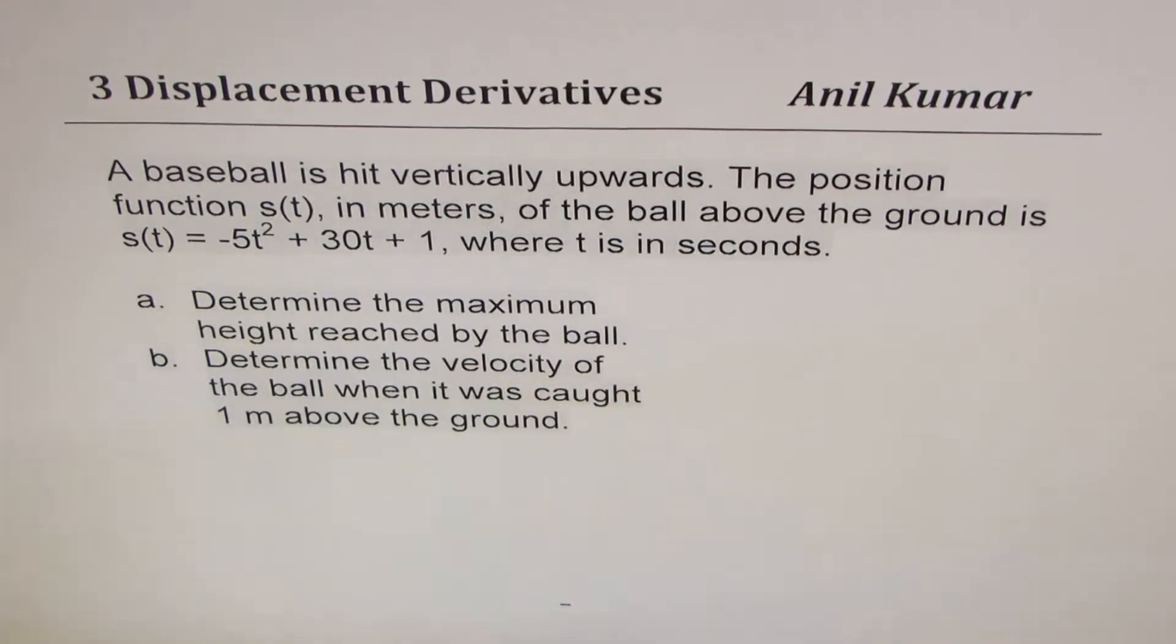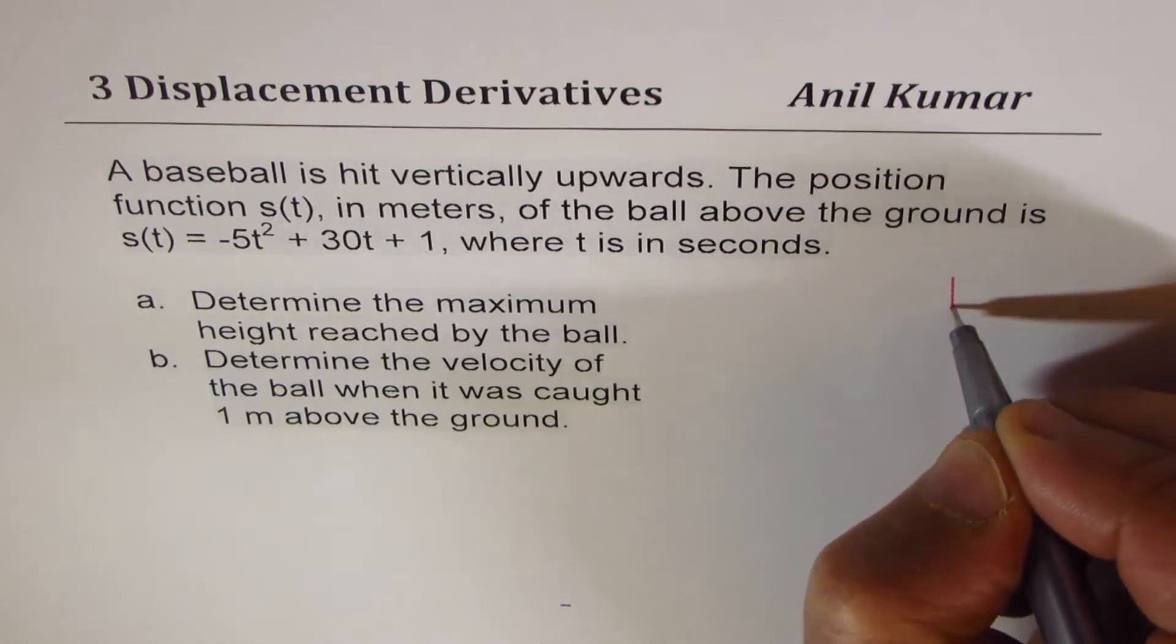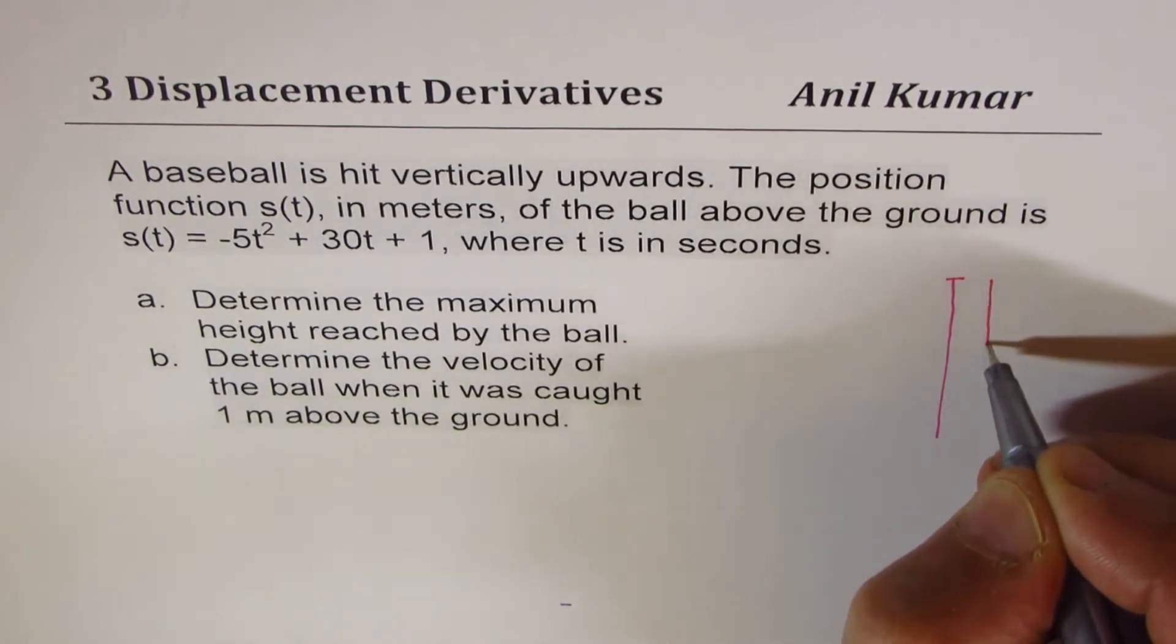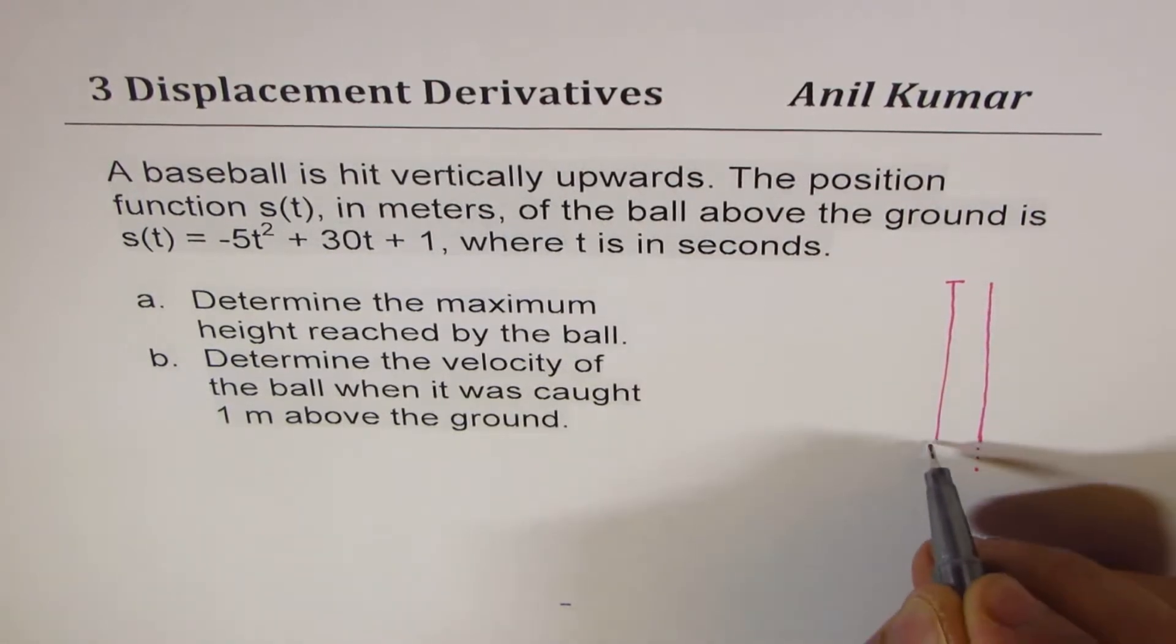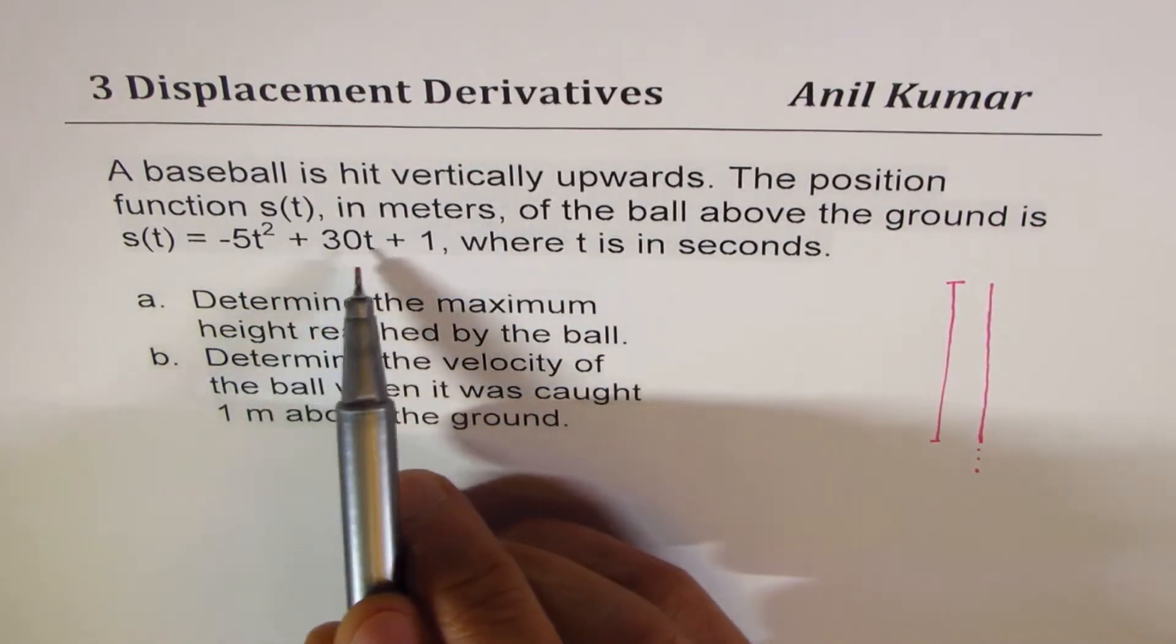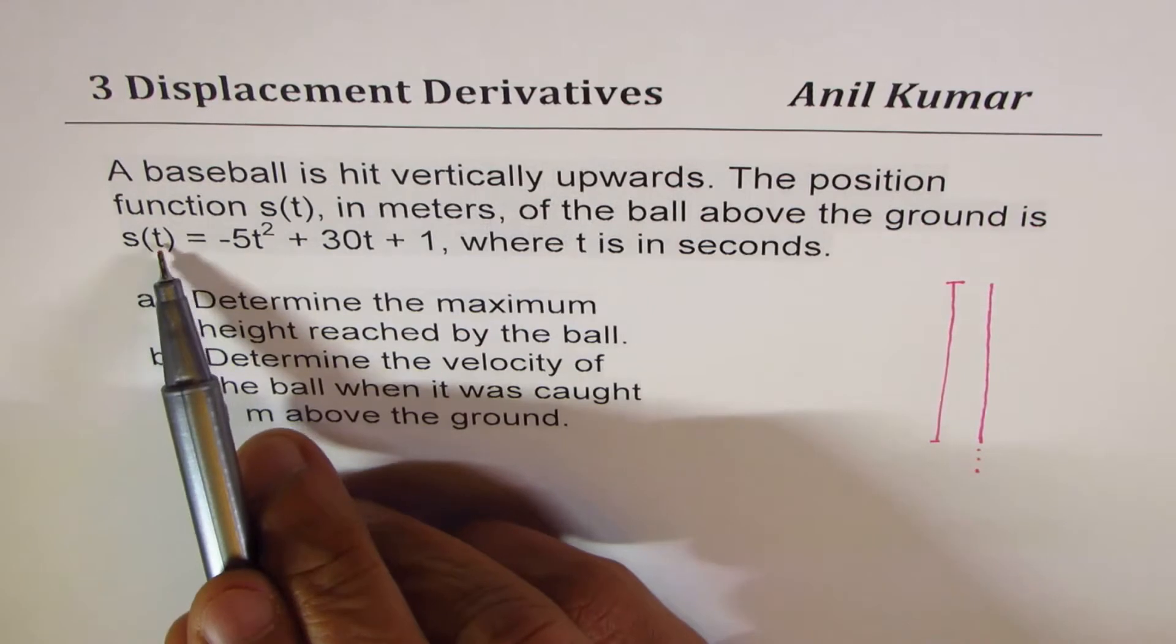Now in this particular case, what we are considering is that a ball is hit vertically upwards and then it falls. It has been hit from the height of 1 meter since if I substitute t = 0, s(0) is 1.